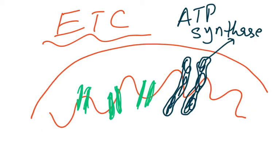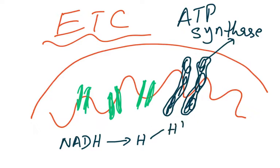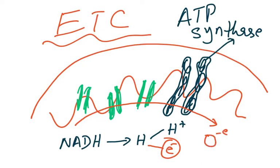This large channel protein enzyme is called ATP synthase. What happens is NADH gives up its hydrogen; the hydrogen splits into a proton and an electron. The electron is shuttled across the membrane via electron carriers and finally gets attached to oxygen — that is why we say oxygen is the final electron acceptor.